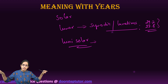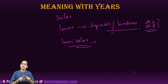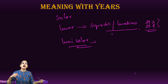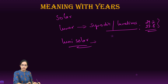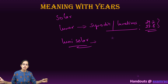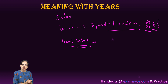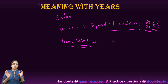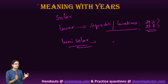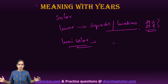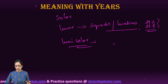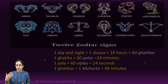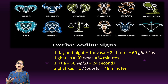In a lunisolar year, the year is counted on the cycle of the solar calendar, but months are counted on a lunar basis. The lunisolar calendar is essentially an adjustment of days and months combining both solar and lunar systems.